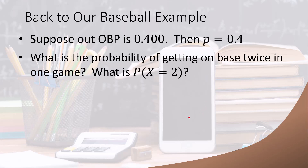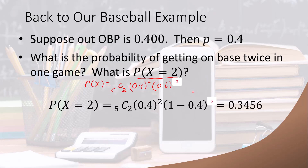Let's go back to the baseball example, now for the case when X equals 2. The probability of X being equal to 2 is the probability of getting on-base twice — 0.4 squared — times the probability of not getting on-base the other three times — 0.6 cubed — times the number of ways that can happen, which is 5 C 2. If you compute that, you get 0.3456.